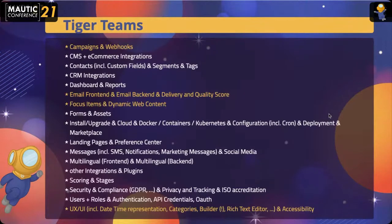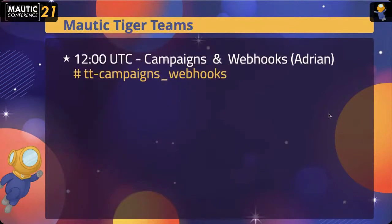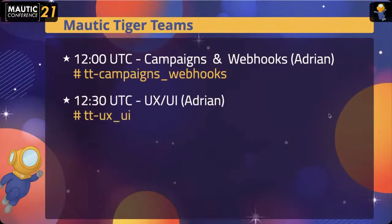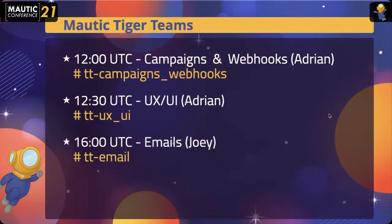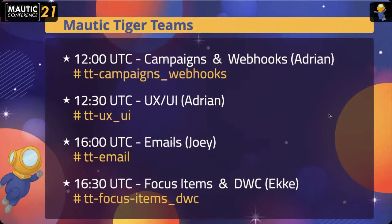Tiger Teams are many — as many as the feature bundles we have here. It's not a technical bundle, but we sometimes have two features in one Tiger Team. The yellow ones are the ones we are doing today. We did presentations on campaigns already and on the user interface. We're looking at email right now, and following up we'll do focus items and dynamic web content.